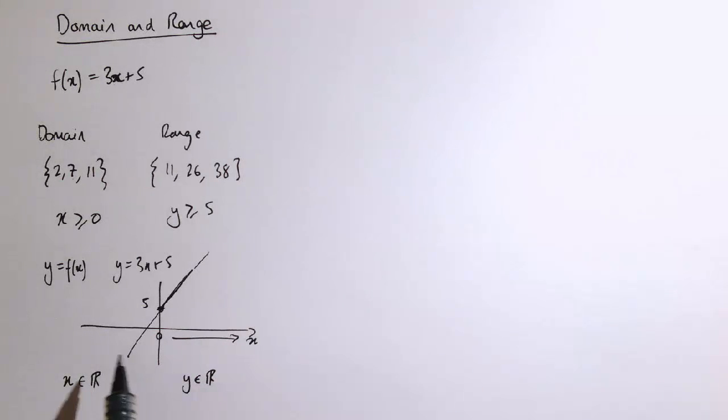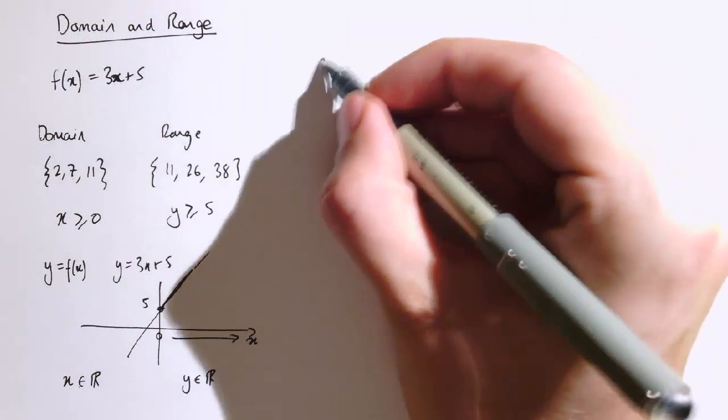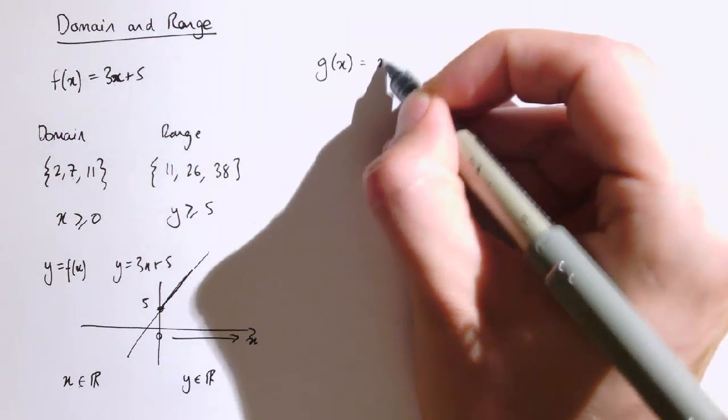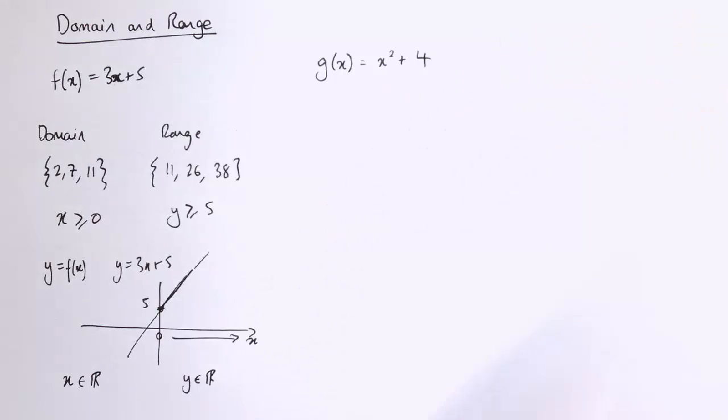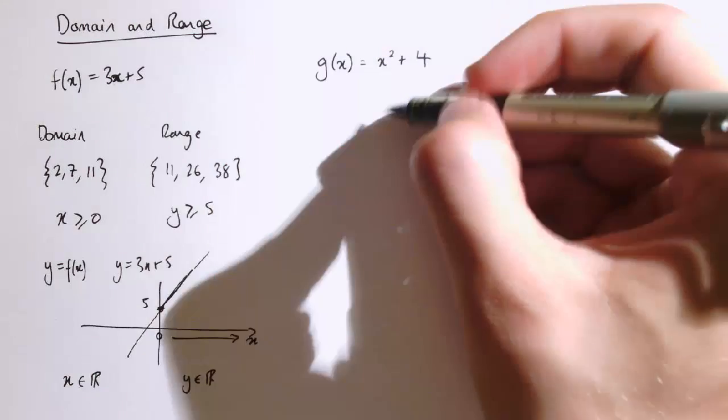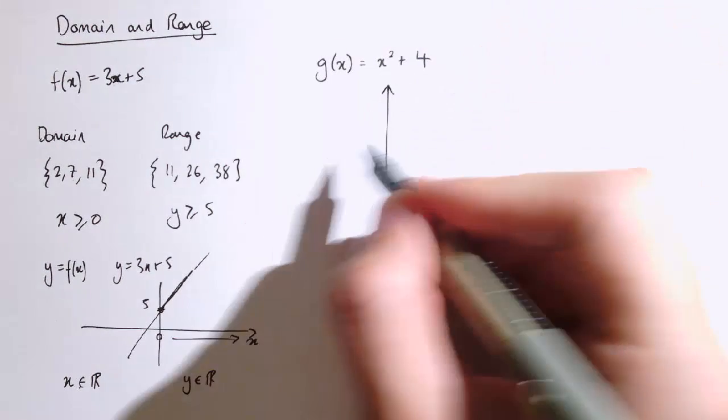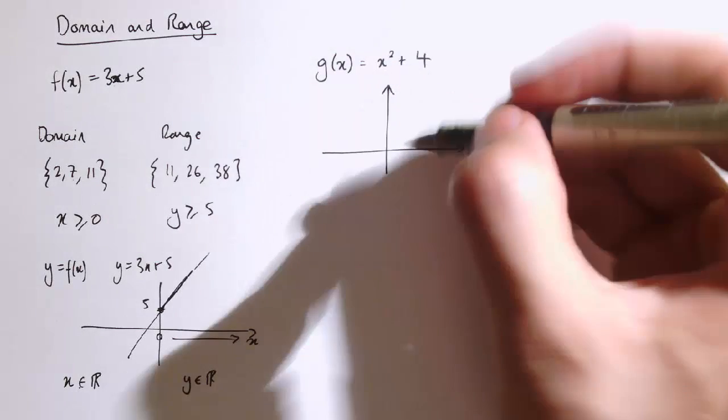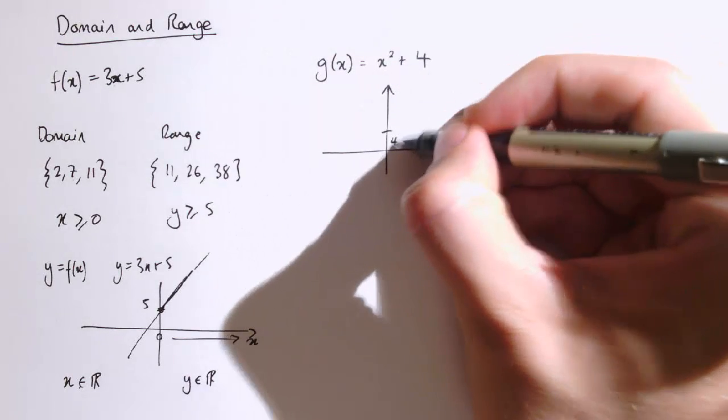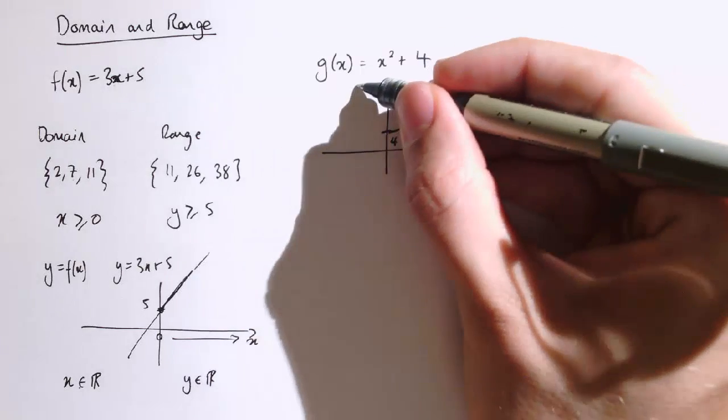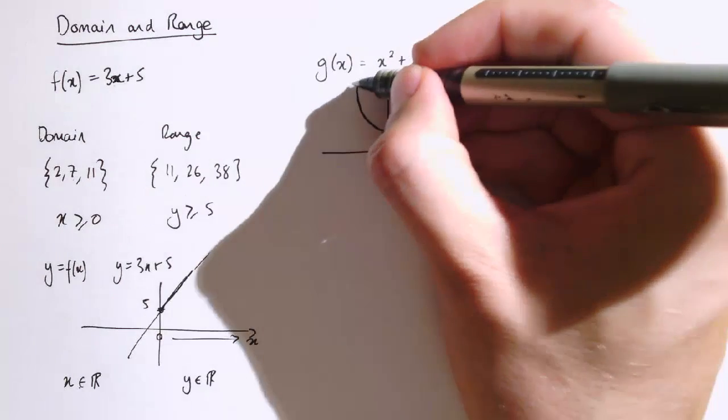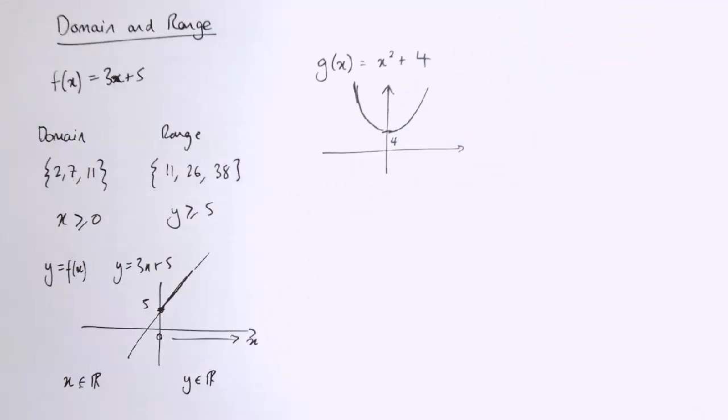That's not always the case. If I took a function like g(x) = x² + 4, let's think about the graph of y = x² + 4. That goes through 4 here and looks a bit like that, symmetric about the y-axis.